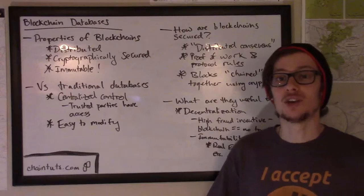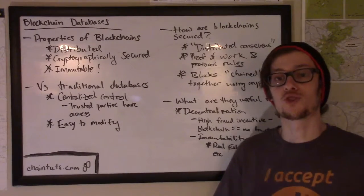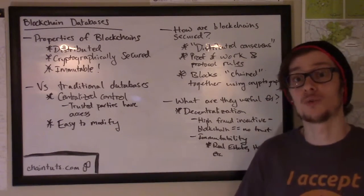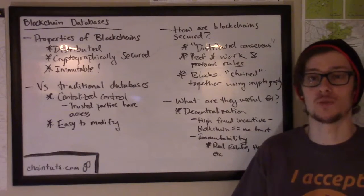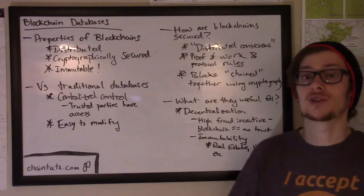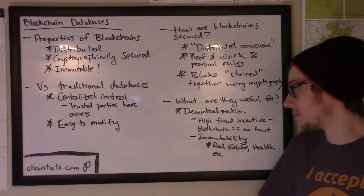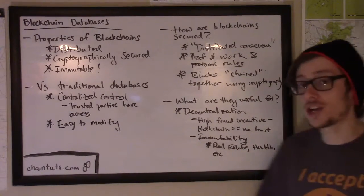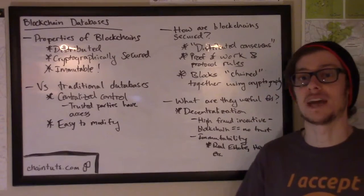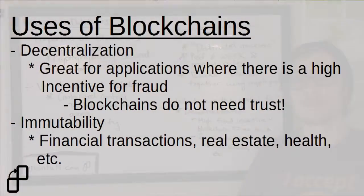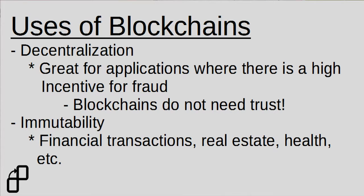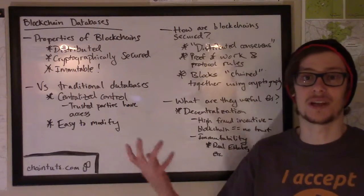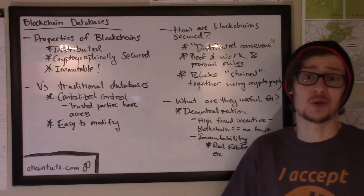With a blockchain, you don't have the traditional need for trust that you do even with traditional banking systems where money is issued by a central government and transactions are validated by trusted people in a banking system. Blockchains are also really useful when immutability of data is critical. Obviously, it's very important that financial data be immutable because you don't want Bob to be able to say he got $50 from Alice when she only gave him $10 — this could make a cryptocurrency's money system completely unstable and pretty much useless.